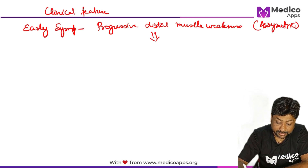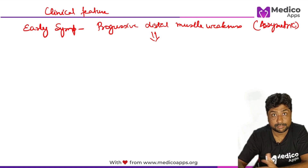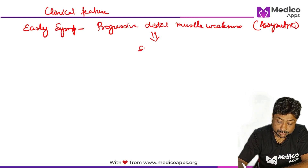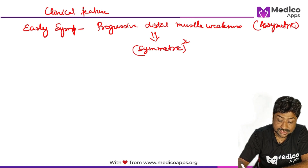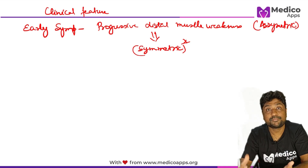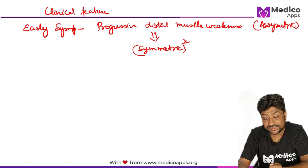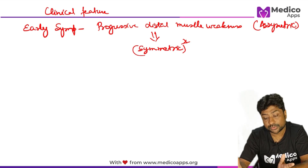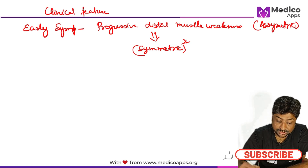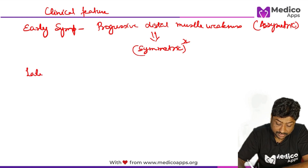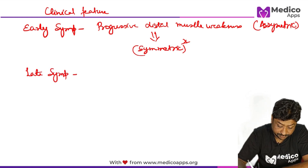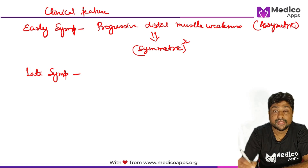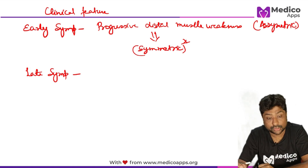Eventually, in later stages, there will be complete muscle paralysis, and the weakness will move from asymmetric to symmetric. If the exam asks whether the muscle weakness is symmetric or asymmetric, remember it is asymmetric initially but eventually becomes symmetric. As the disease progresses, you will start having both upper motor and lower motor neuron features.